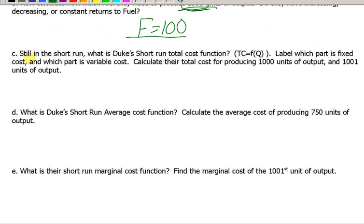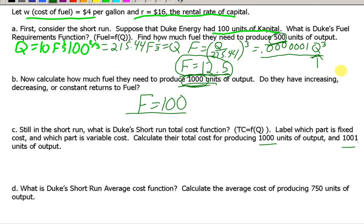In the short run, what is Duke's short run total cost function going to be? Label which part is the fixed cost and which part is variable cost. Calculate their total cost for producing 1,000 units of output and 1,001 units of output. Okay, well, let's do that. How do we do that?